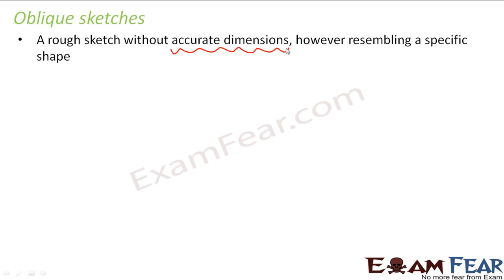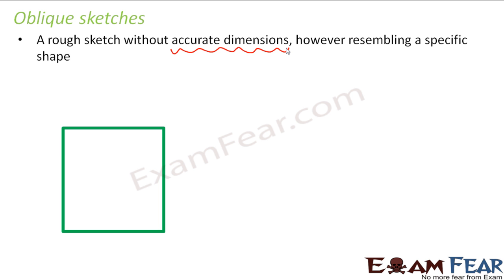Let us take the example of a cube. In a cube, all the faces are exactly equal and each face is a square. We draw it in such a way that the most prominent features face towards the observer — that means when you look at a cube from the front, only those prominent features should be focused more.